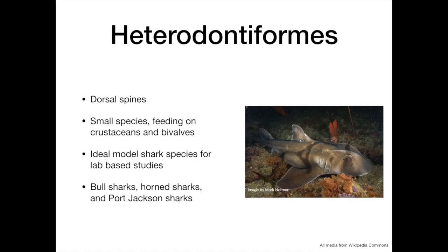The heterodontiforms are a group of small sharks possessing dorsal spines. An example, the Port Jackson shark, is an ideal model species for lab-based studies and is often used to investigate shark behaviour.